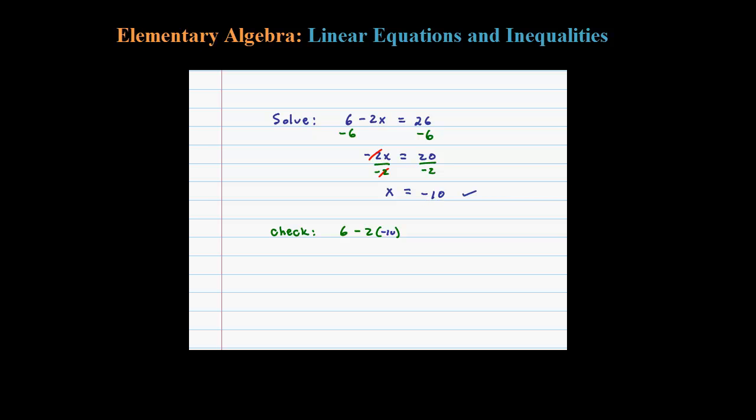negative 10 should work, so when I plug in negative 10 it should come out with 26. Let's see if that works. So 6 minus 2 times negative 10 is plus 20, and that comes out to 26, so it checks out. Usually the check is optional.